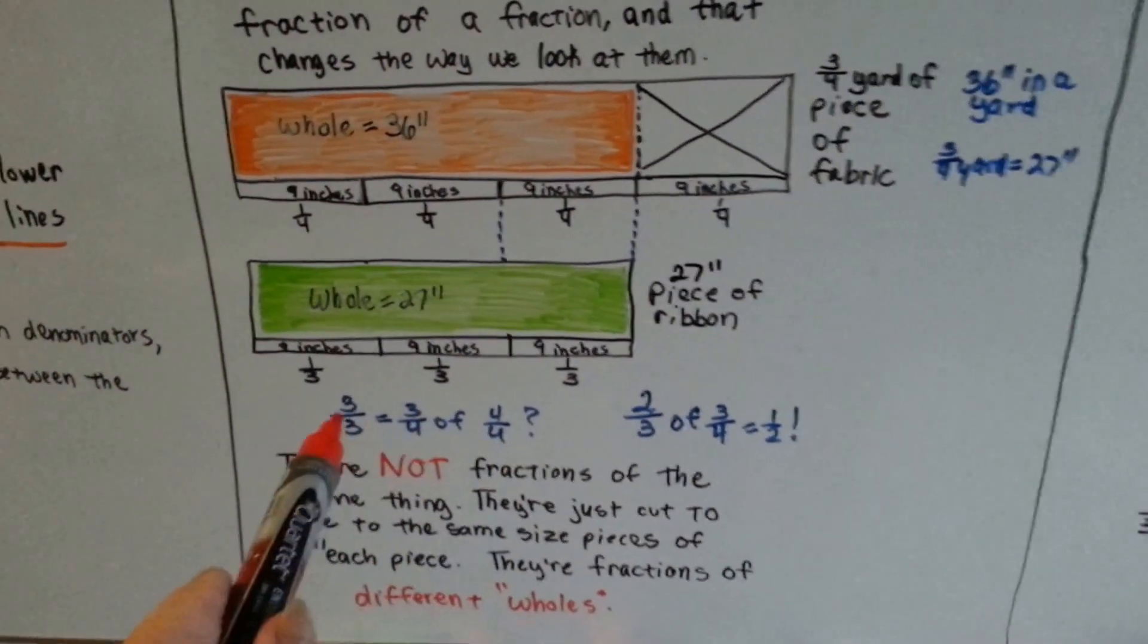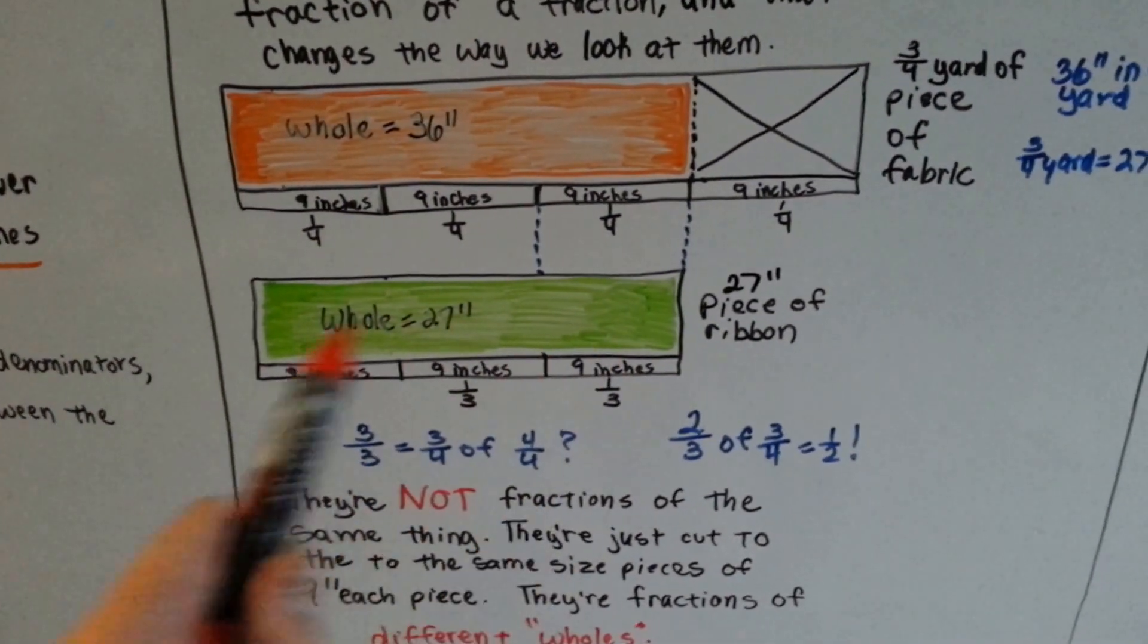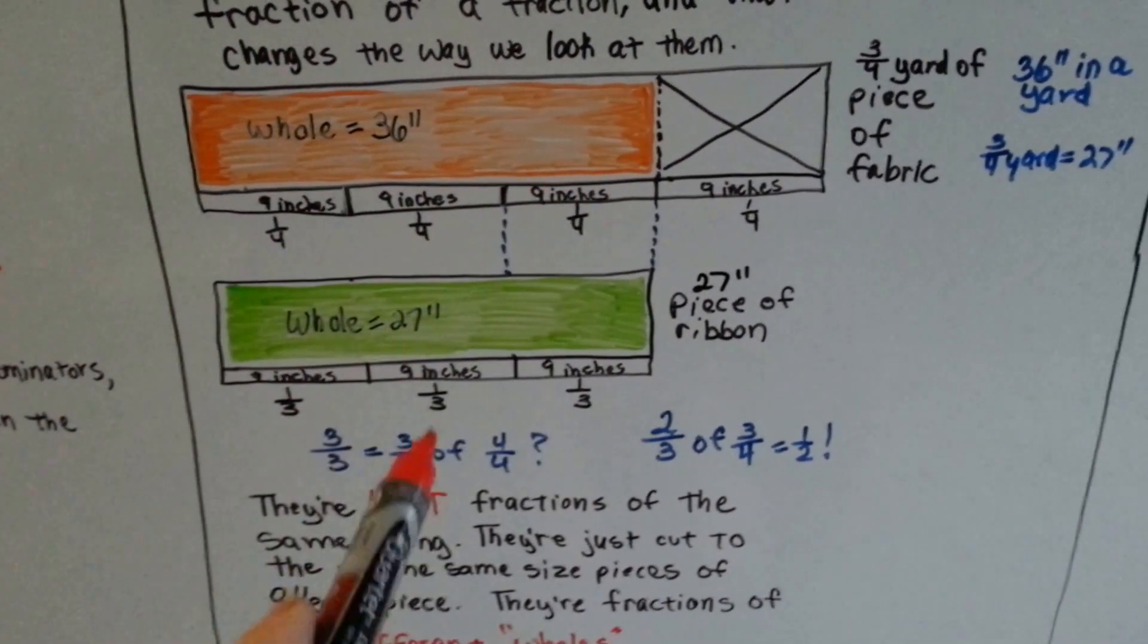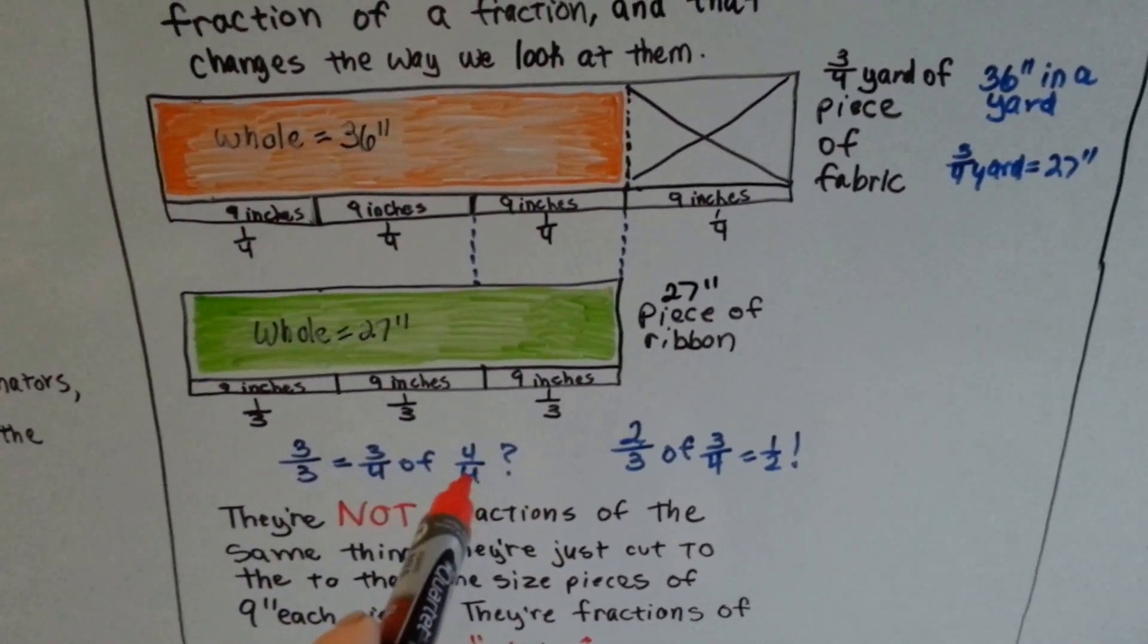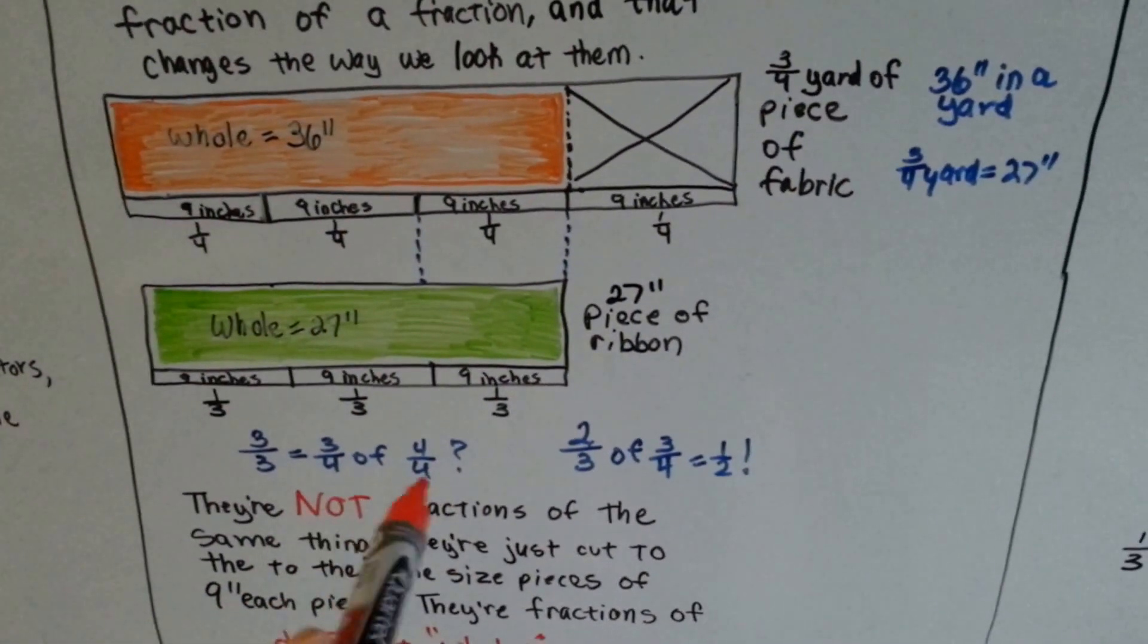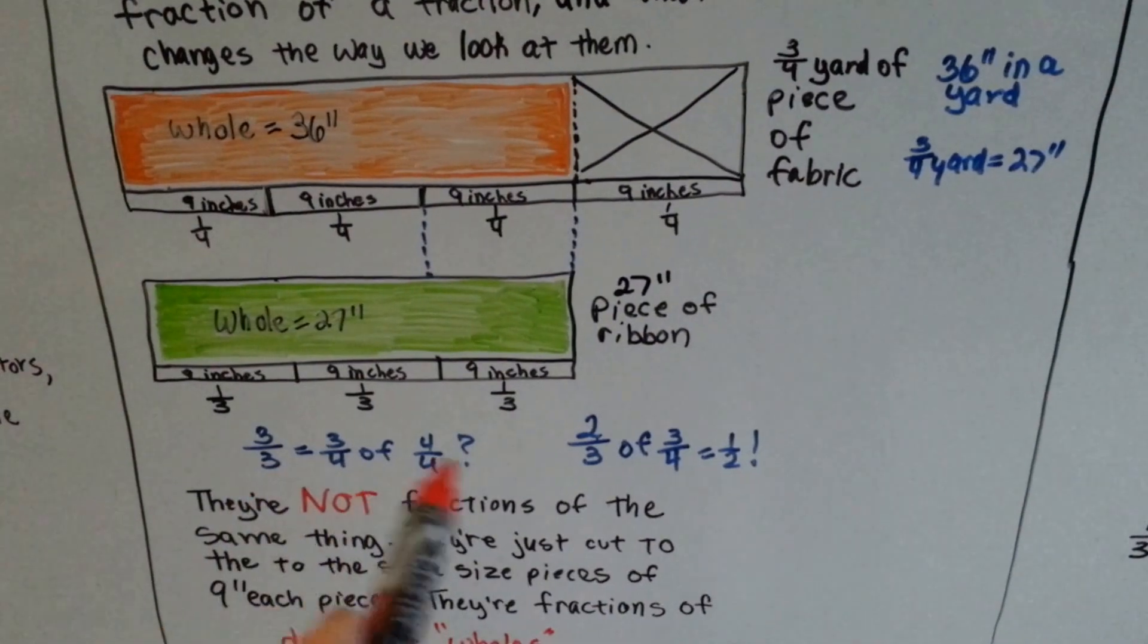We're just not finishing our statement. Three-thirds is equal to three-fourths of four-fourths. And by writing the four-fourths, you see where the difference is.